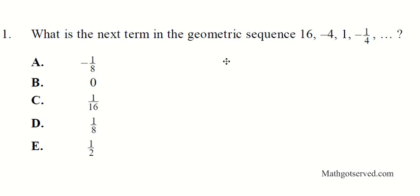Number one says: what is the next term in the geometric sequence? 16, negative 4, 1, negative one-fourth. Now for geometric sequences, the next term differs from the previous one by something called the common ratio.